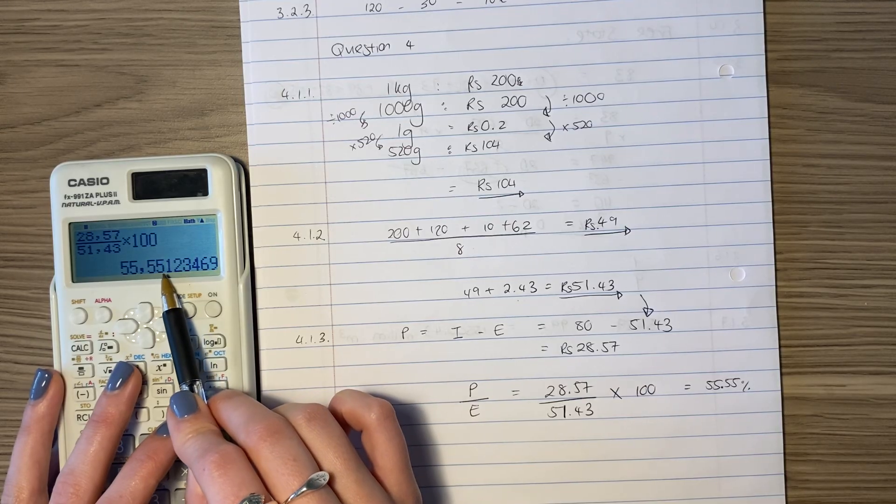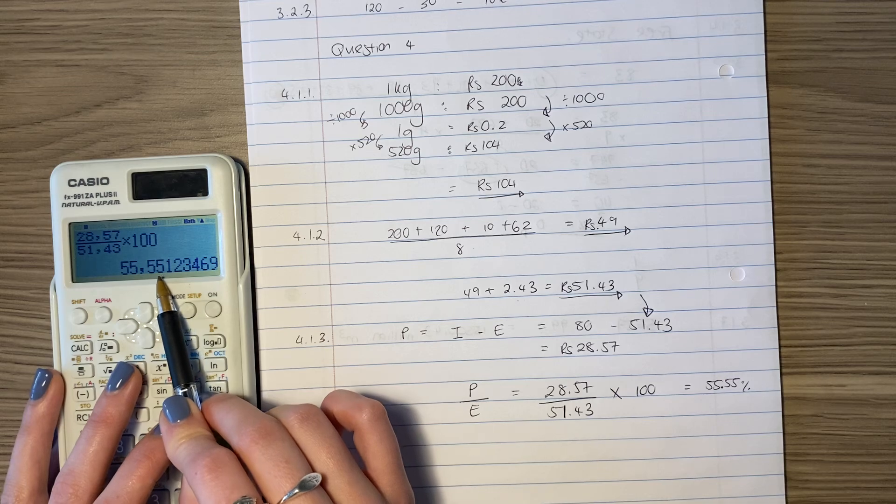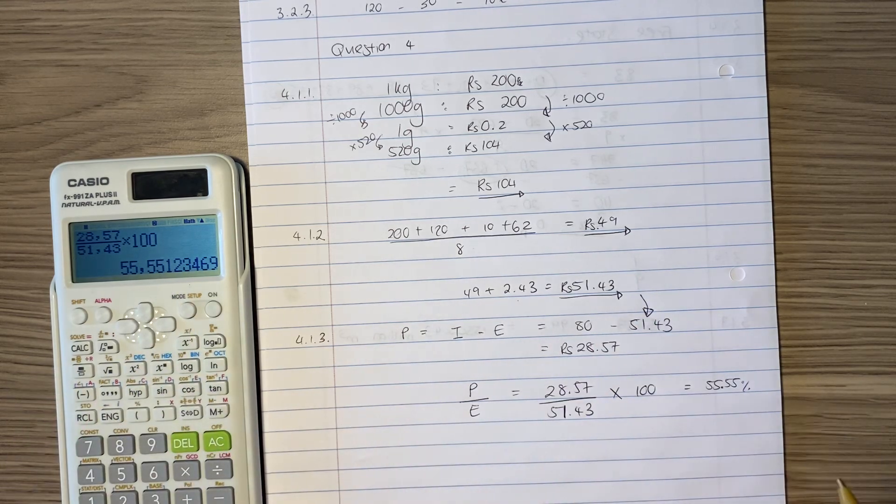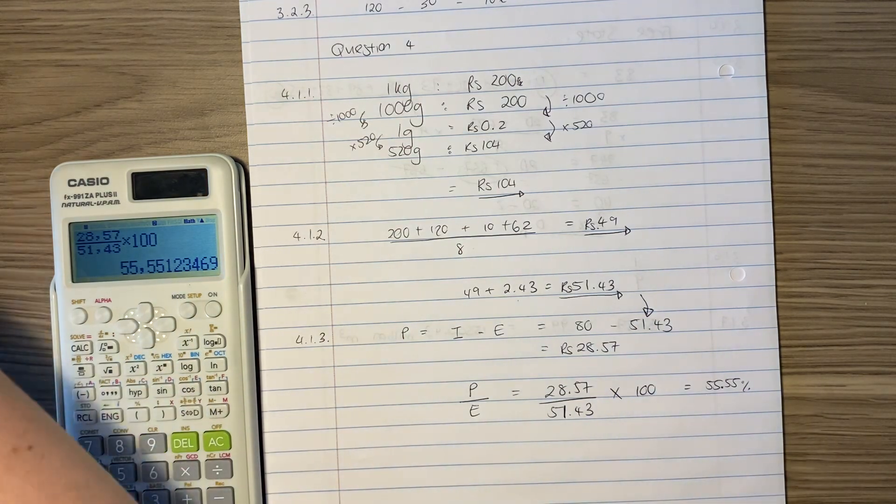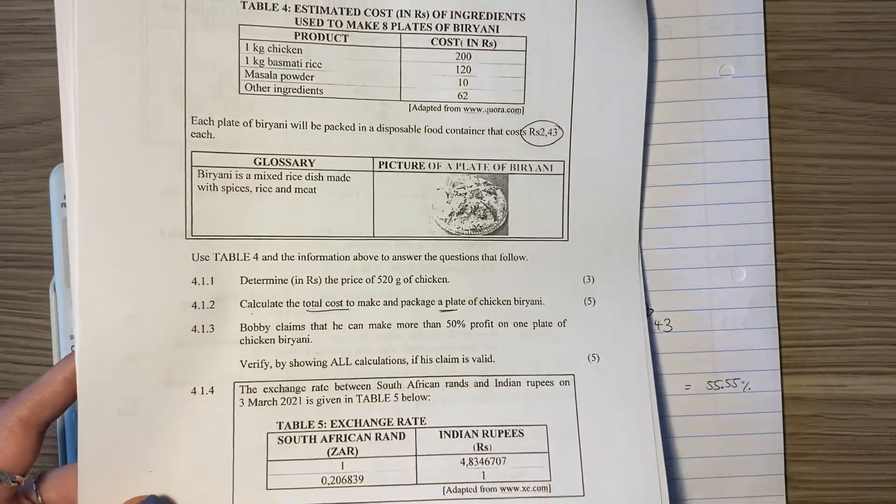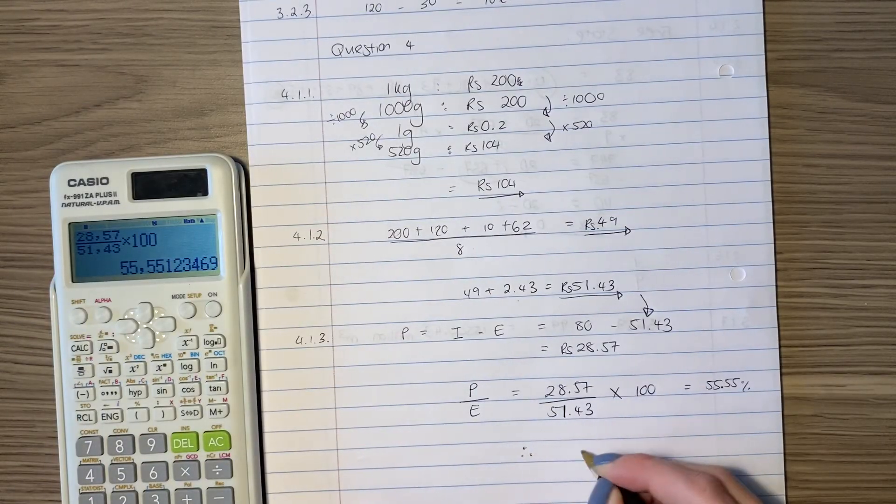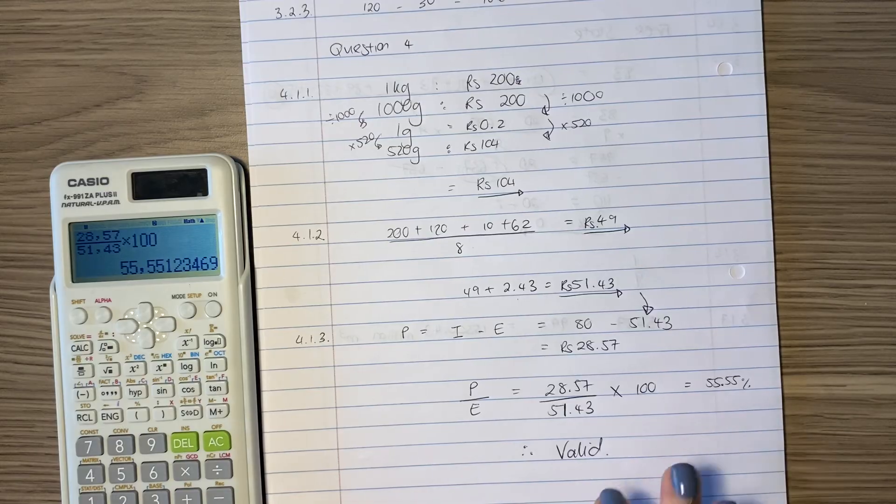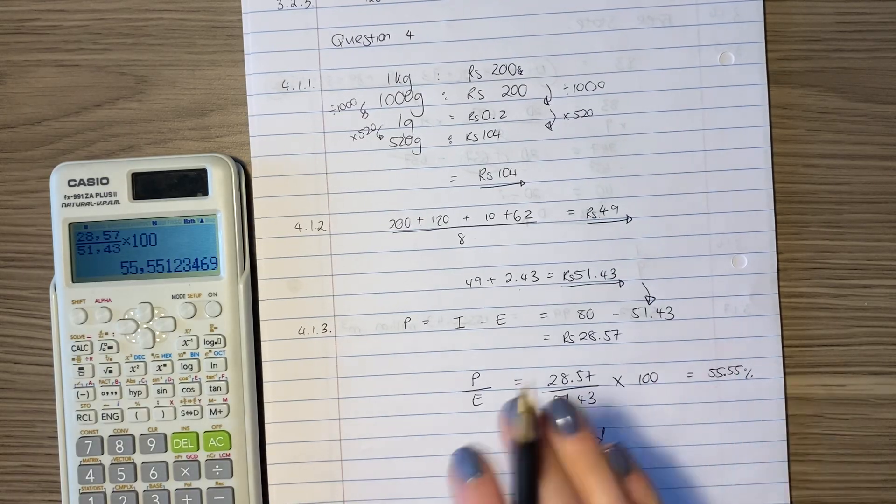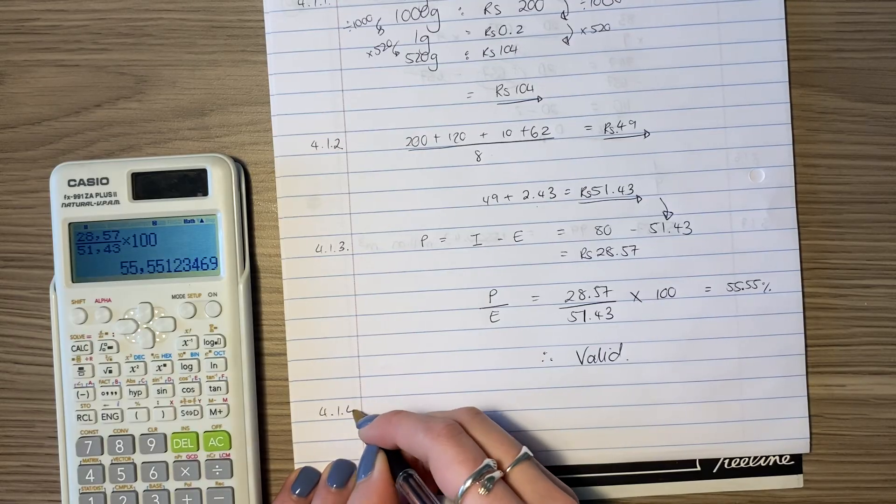Why is it 55? Because my third decimal is 1, which is below 5. And therefore, I round it down. So now, what's important is it says here, verify by showing all calculations if his claim is valid. So now, it is over 50%. But don't just leave it like that. You have to say, therefore, valid. You have to give a little conclusion. And you get a mark for that. So many students forget that. I don't want you to be one of those students.